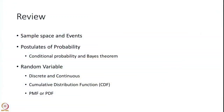Let us review what we have done in the past. We formally introduced the definition of probability through the definition of sample space and events. Any random experiment's selection of all its possible outcomes is called a sample space, and any subset of a sample space is called an event. Then we introduced three postulates of probability: for any event probability is positive, for the complete sample space probability is 1, and if there are mutually exclusive events, the probability of union of all of them is the sum of the probabilities of all the events.